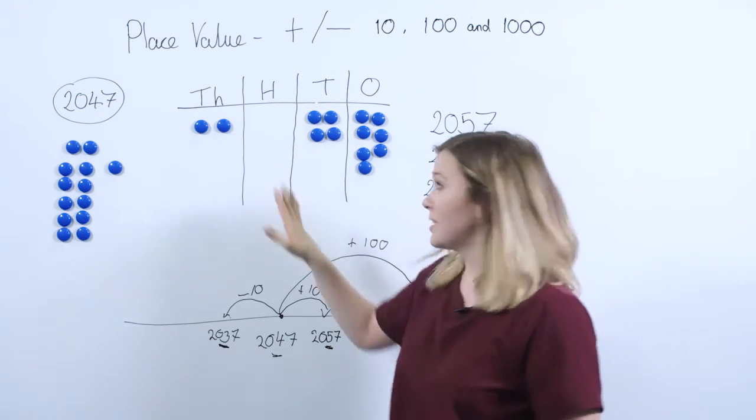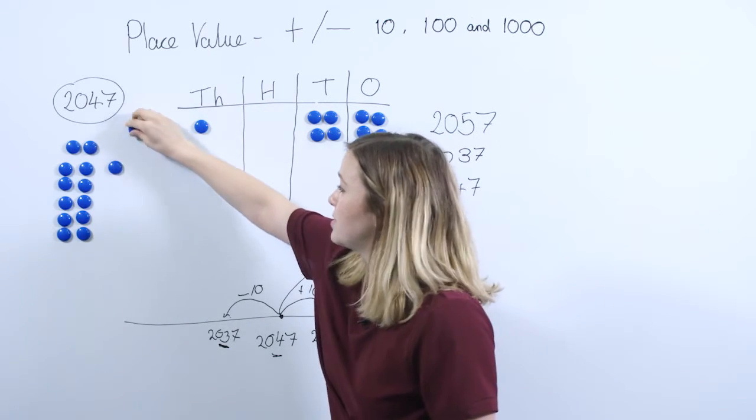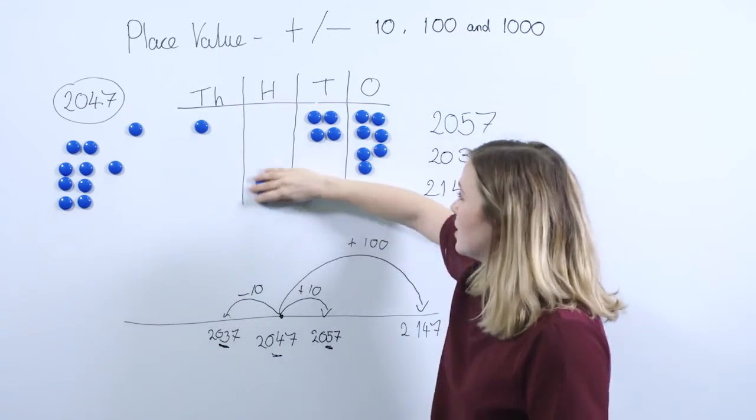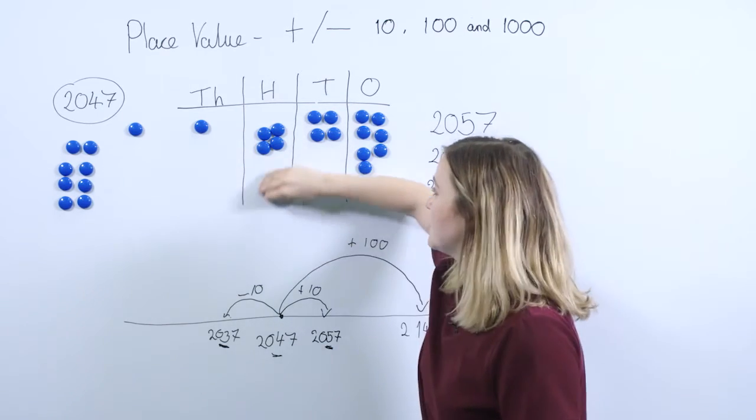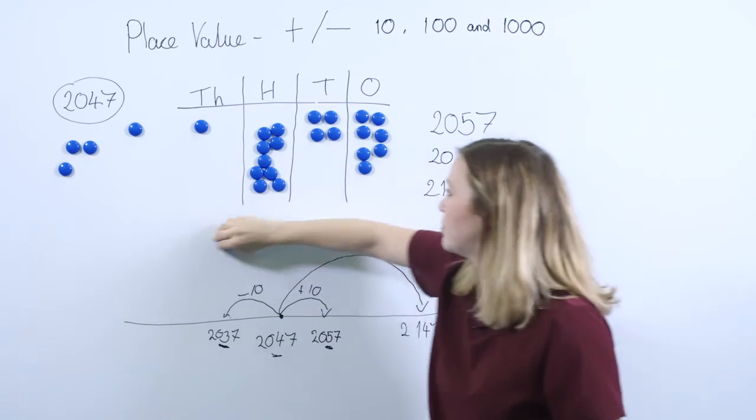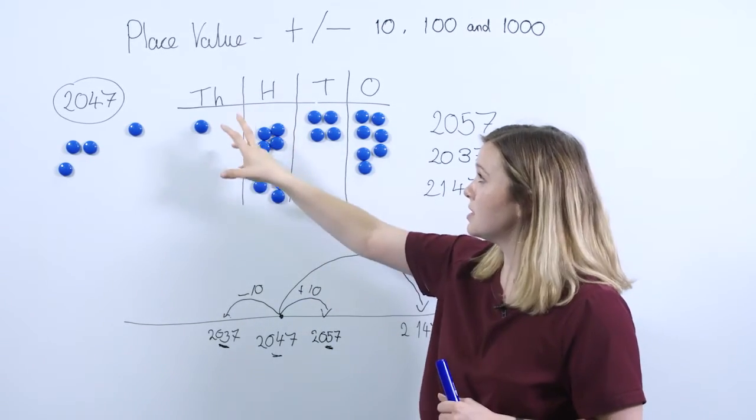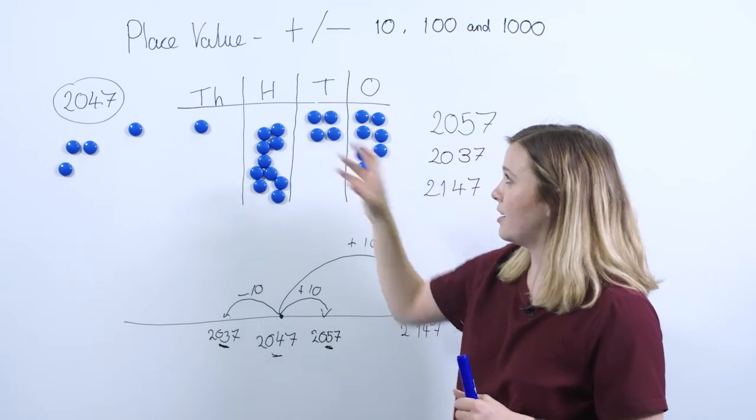So what do they need to do in this instance? All you need to do is exchange one of your thousands for 10 hundreds. So we're going to swap this over and we're going to put 10 hundreds into our hundreds column. This is a really important skill to teach pupils about regrouping, and we've got 1 thousand is the same as 10 hundreds.